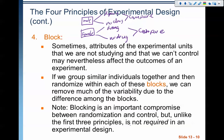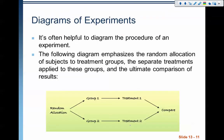Those are our four big principles of experimental design. Once we've figured out what we're going to do, we diagram the experiment out, which gives a visual picture of how we are separating the treatments. We randomly allocate participants to two groups: group one gets treatment one, group two gets treatment two, and then we compare the two groups. This is a simple example of an experiment with two treatments, and diagramming helps organize our approach.